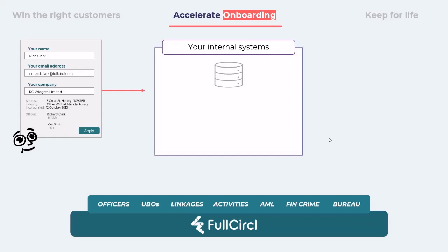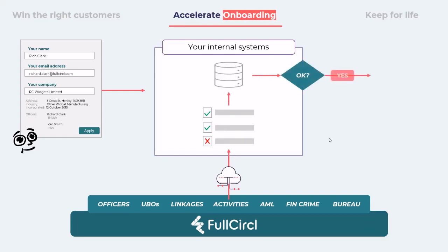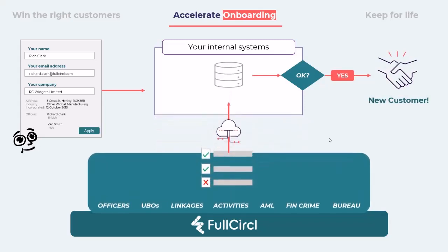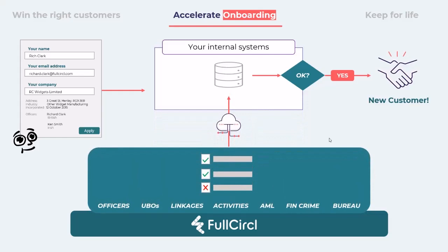There are two main ways in which our customers are using this platform for onboarding. Firstly, some customers are pulling in our company and compliance data into their back office and onboarding platforms, executing their checks — whether manually or automatically — and making a determination as to whether this is a suitable customer for them. Others are utilizing our decision engine, Full Circle Connect, to run their onboarding checks for them. By delegating the check to us, they benefit from the same high-quality data assets plus our fully configurable decision engine, resulting in a fully automated onboarding result in just seconds.